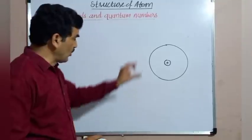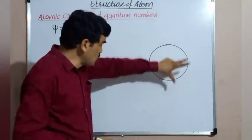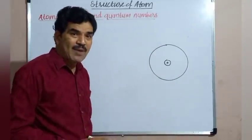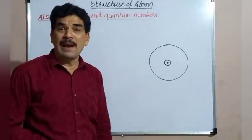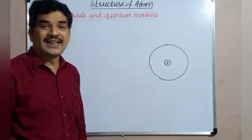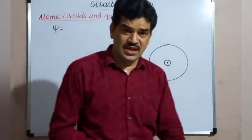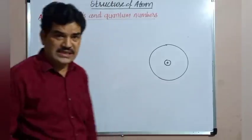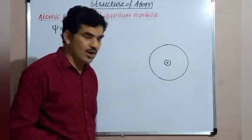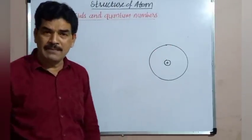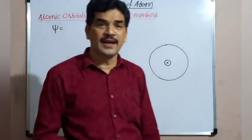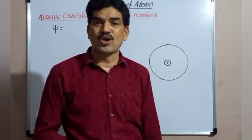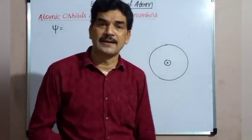A particular portion in this space has a maximum probability of finding the electron. That region around the nucleus having the high probability or maximum probability of finding the electron is known as the orbital or atomic orbital.